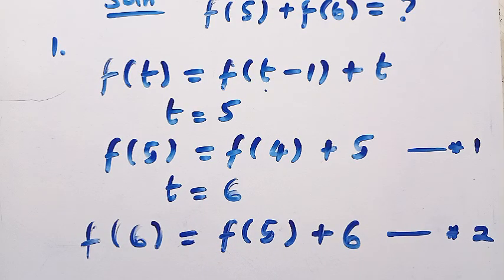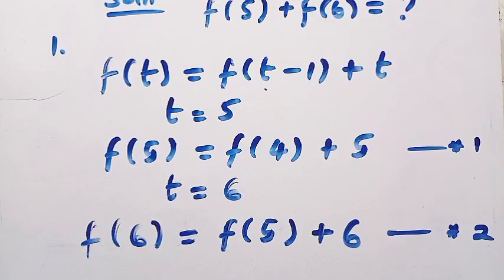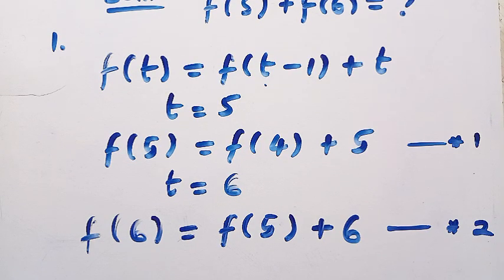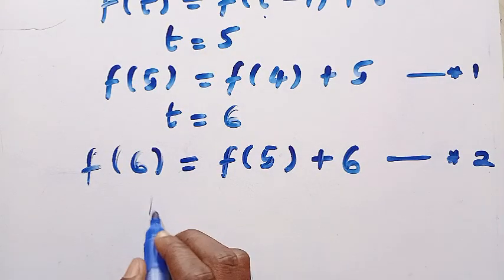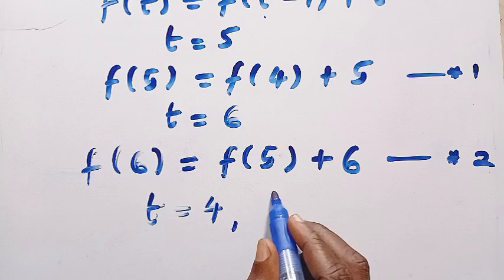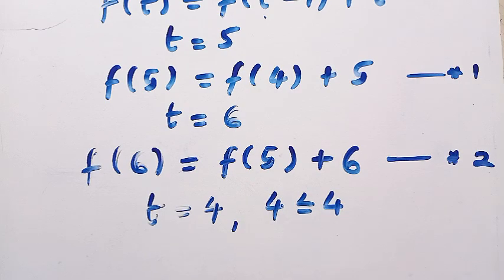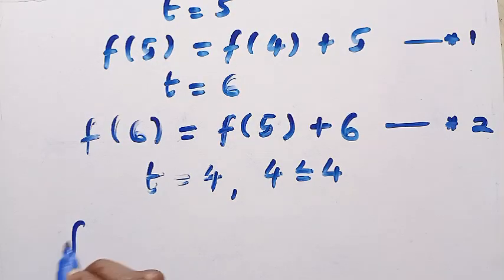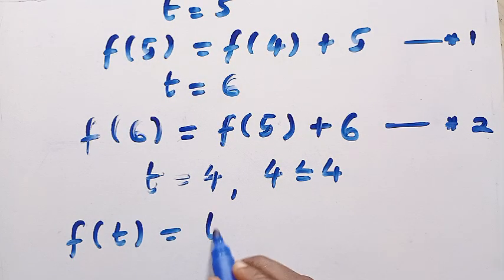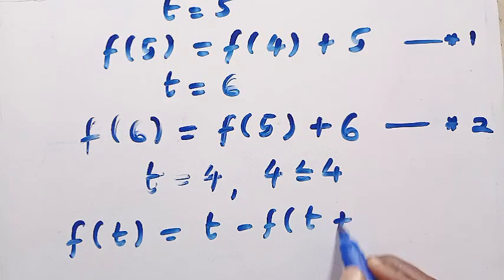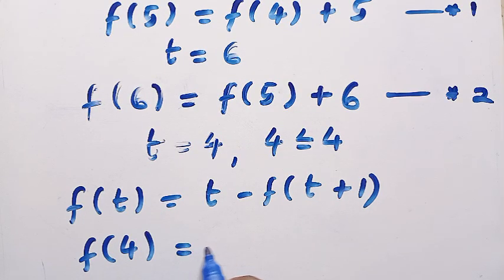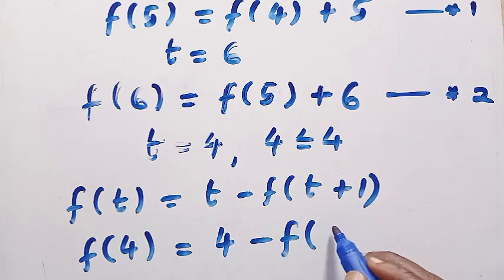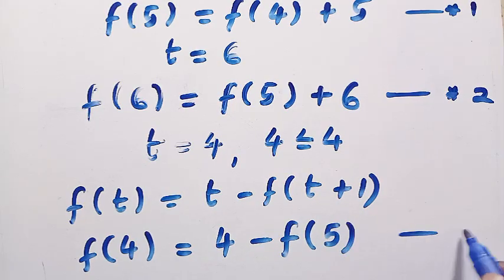The f(5) and f(6) we are looking for are part of these equations, so we need to combine them. Here comes the second function. Since 4 is less than or equal to 4, we apply the second equation. When t equals 4, we have f(t) = t − f(t+1), and t+1 gives us 5. So f(4) = 4 − f(5) — call this equation 3.